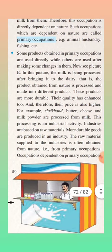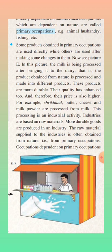Fishing is a primary occupation. Some products obtained in primary occupation are used directly, while others are used after making some changes in them. See picture E — in this picture, milk is being processed after bringing it to the dairy. The product obtained from nature is processed and made into different products. These products are more durable, their quality is enhanced, and therefore their price is also higher. For example, shrikhand, butter, cheese, and milk powder are processed from milk. This processing is an industrial activity.